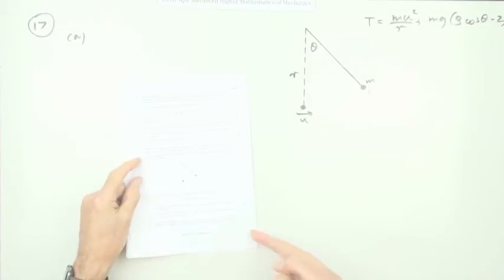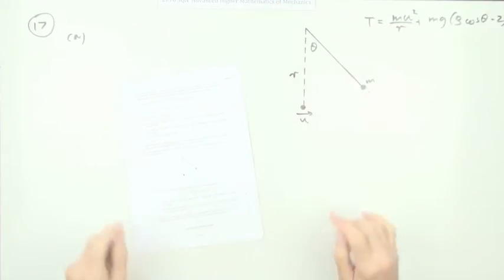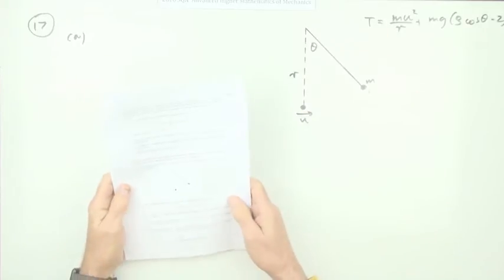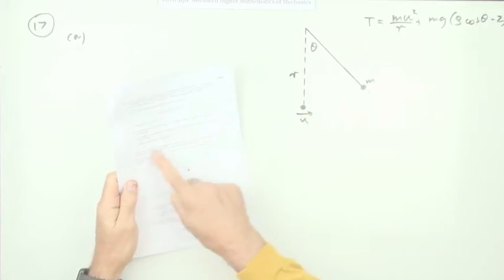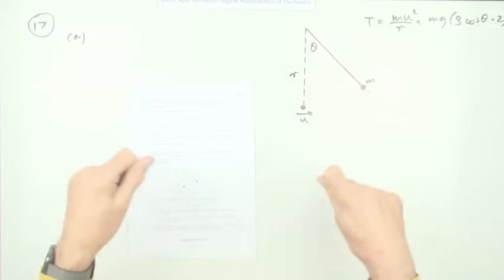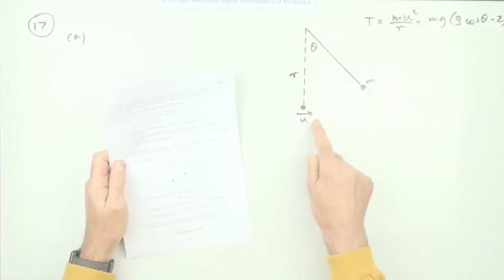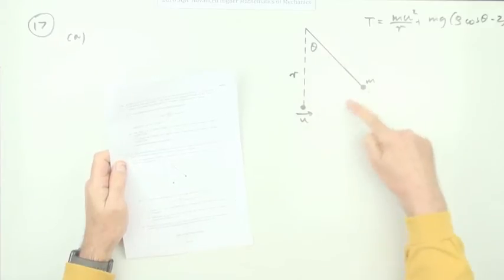So number 17, the last question in the 2016 Advanced Higher Mathematics of Mechanics. Here we go, a little pendulum circular motion. The description first of all: an inextensible string of length r, a mass m, it's given the initial velocity from the equilibrium position of u meters per second.